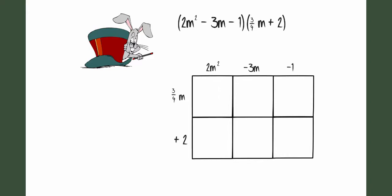So now I'm going to multiply this out. That's 2m squared times 3 fourths m, which gives me 6 fourths m to the third, or 1 and a half m to the third. I'm going to have negative 3m times 3 fourths m, which gives me negative 9 fourths m squared, or as a mixed number, that's negative 2 and 1 fourth m squared. And then I have negative 1 times 3 fourths m, which, of course, is negative 3 fourths m.